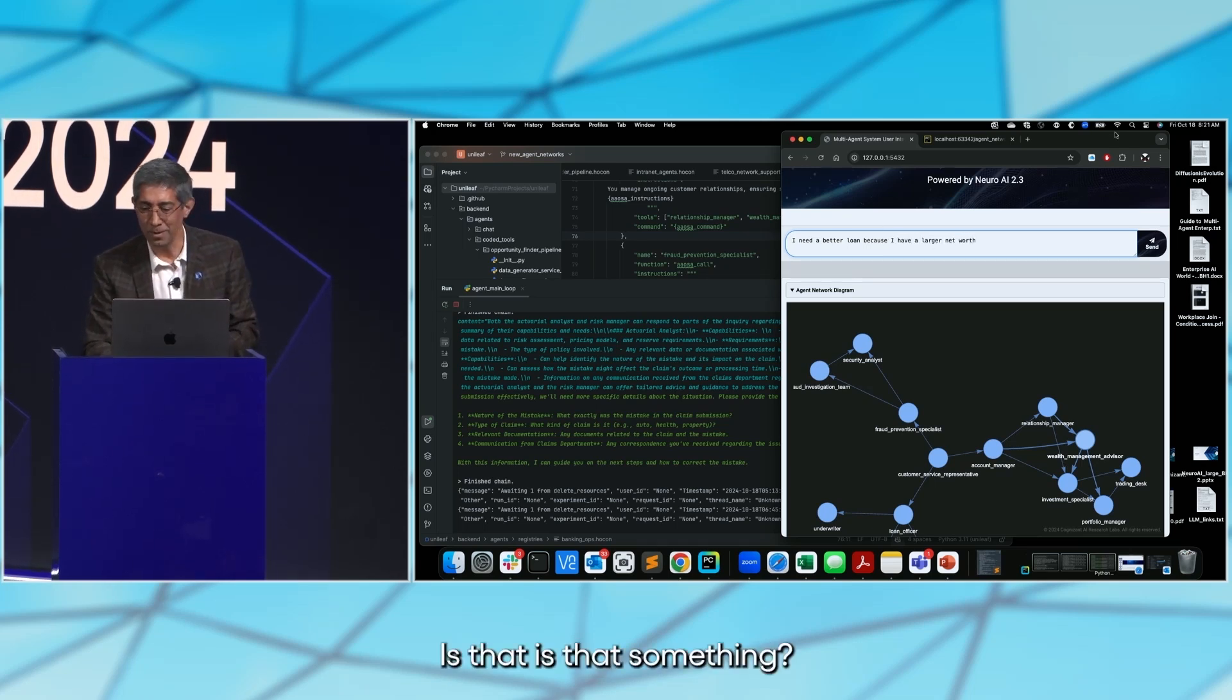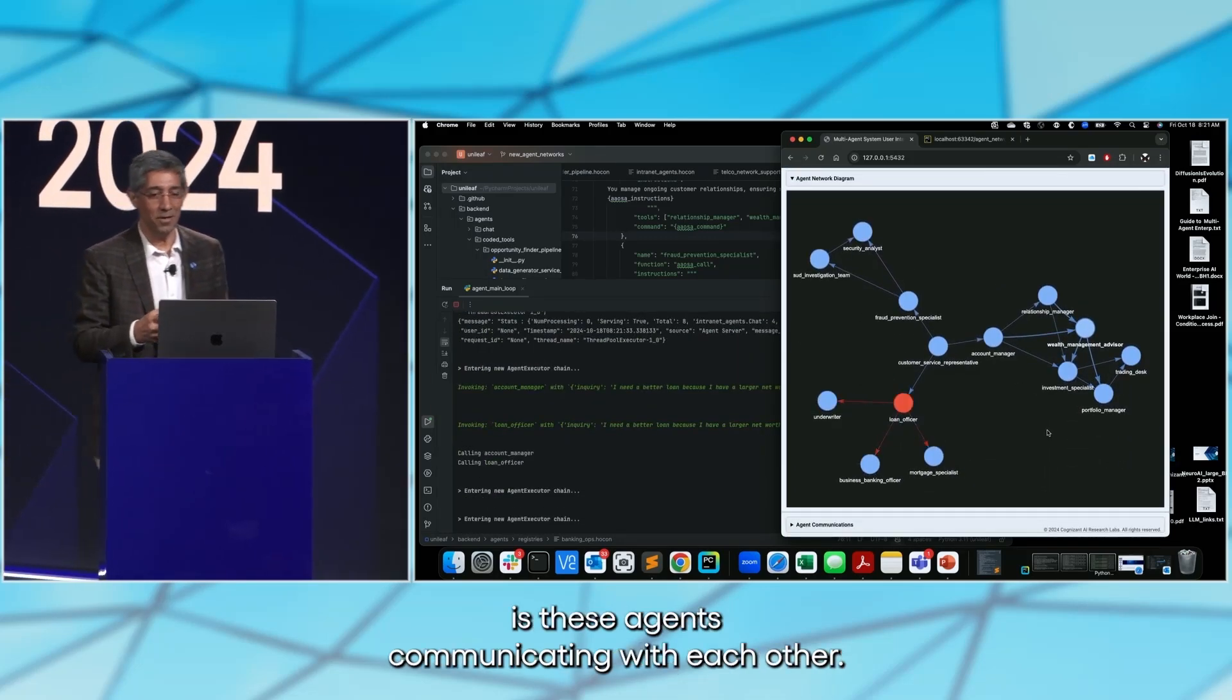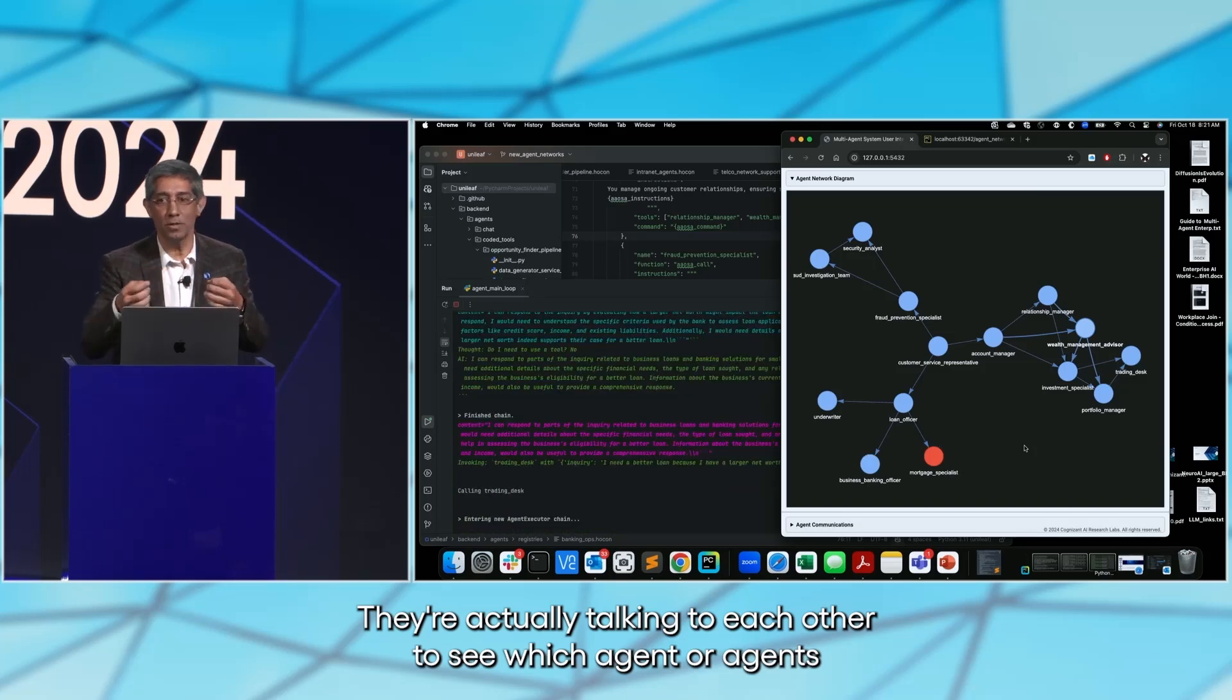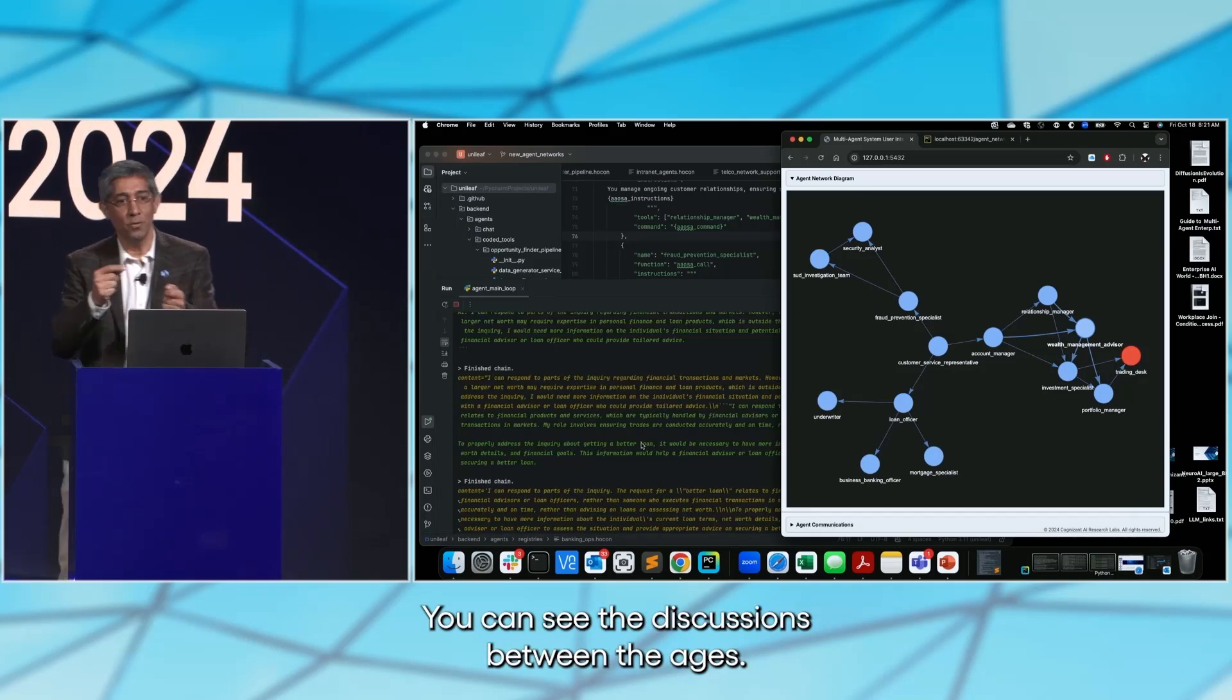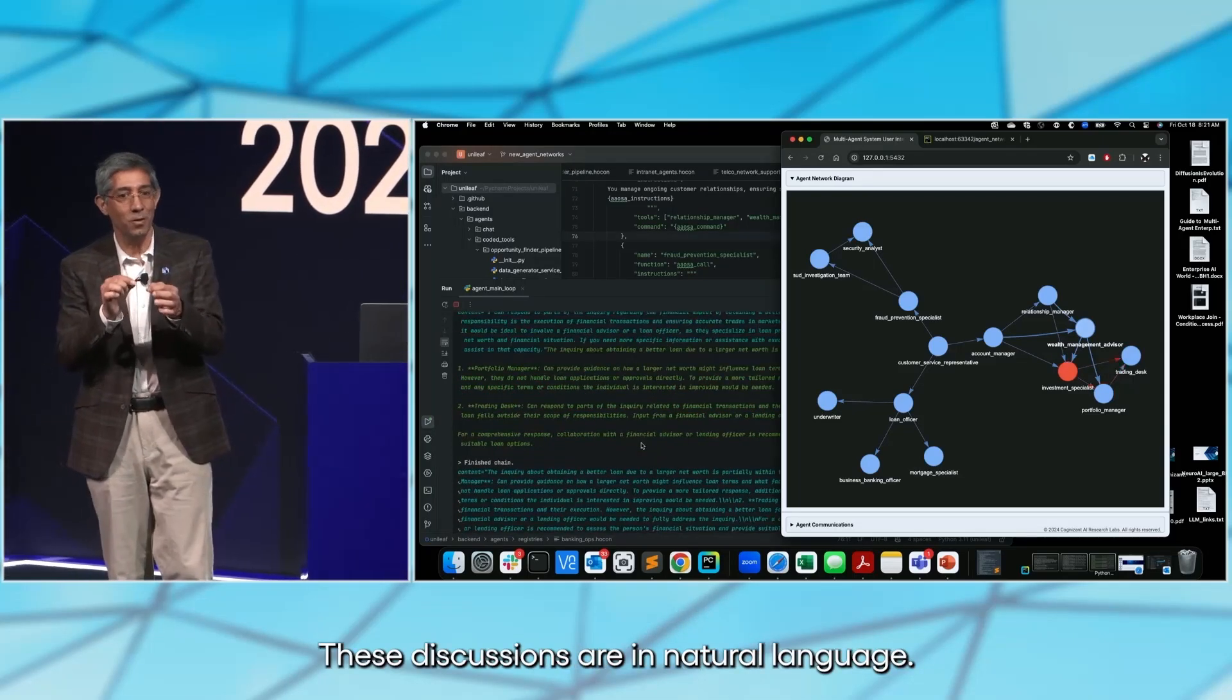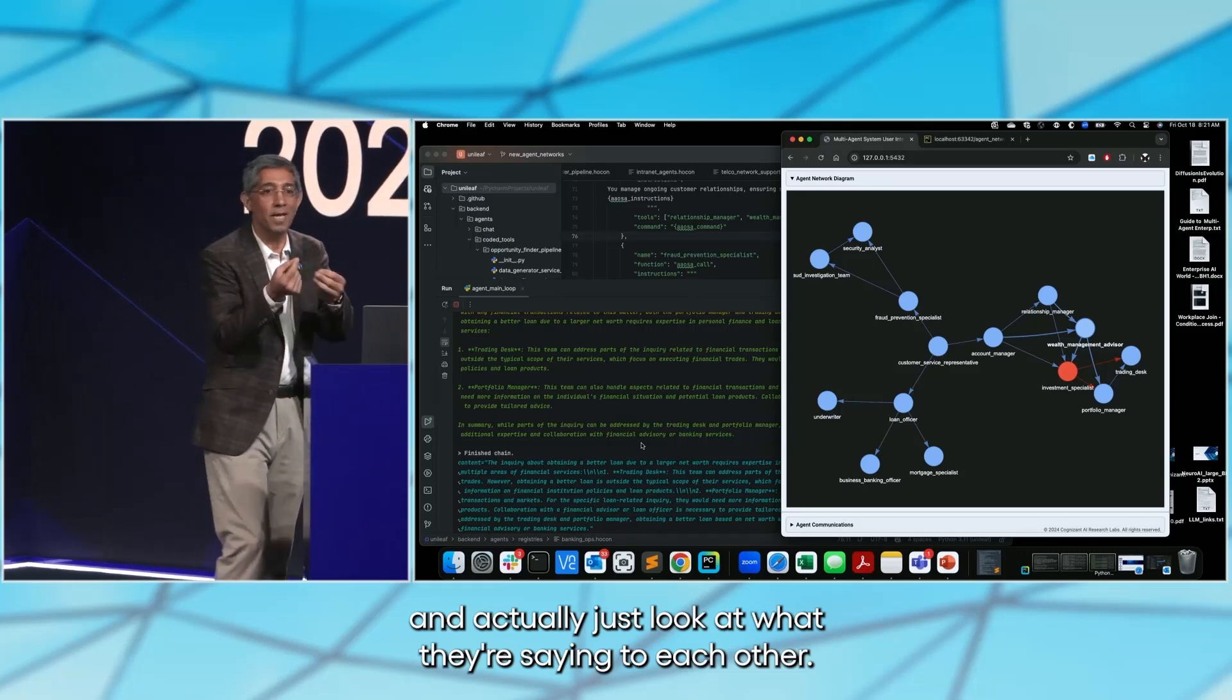What you're going to see here is these agents communicating with each other. They're actually talking to each other to see which agent or agents are going to have to talk to us. You can see the discussions between the agents. These discussions are in natural language. It's amazing to sit down and actually just look at what they're saying to each other.